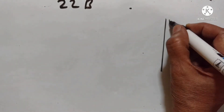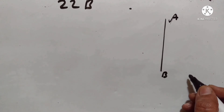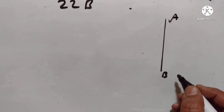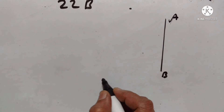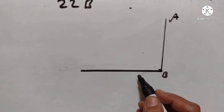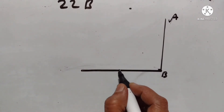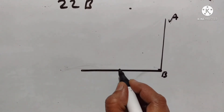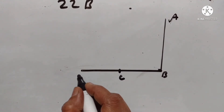Second problem: find the height of a tree. Suppose AB is the tree. When it is found that on walking away from it 20 meters in a horizontal line through its base, the person is first at C and then walks away to D.